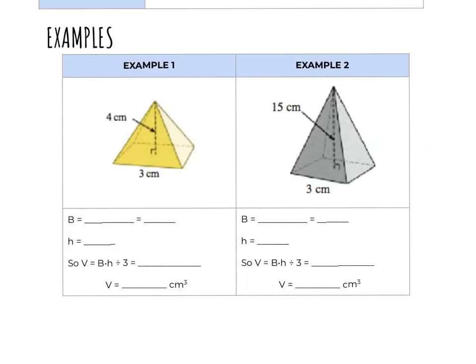Let's look at some examples. In the first example, our base is a square with side length of three centimeters. Since it's a square, the other sides would also be three centimeters. To find the area of that square, I would take three times three, or three squared, which gives me an area of nine square centimeters.